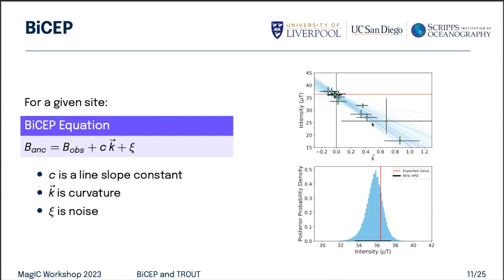Audience: I can see for meteorites you might have magnetization — it might be interesting to combine the two and call it BICEP. Speaker: In the BICEP paper we did do this on some archaeological data that were fired in a kiln and then reheated in an oven somewhere else — two different directions in there. You can isolate one of the directions quite well. The other wasn't so easy because there were very few data points for the secondary component. But with BICEP you can get an intensity for one direction quite well.